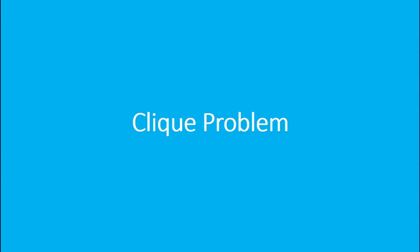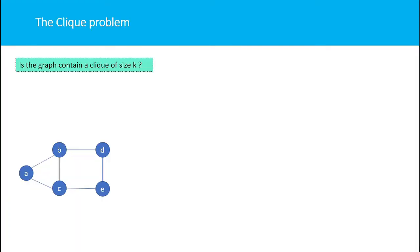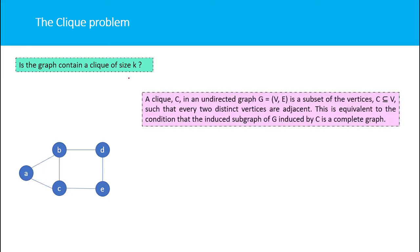The clique problem: you are given a graph and asked whether the graph contains a clique of size K. A clique C in an undirected graph G(V) is a subset of vertices such that every two distinct vertices are adjacent.